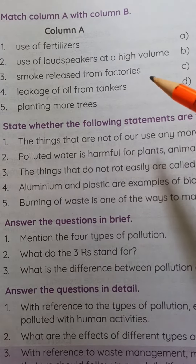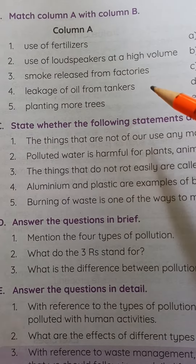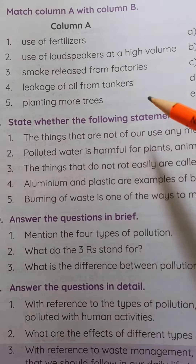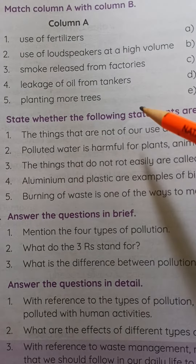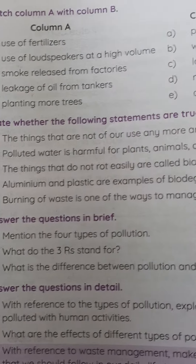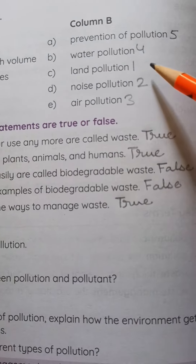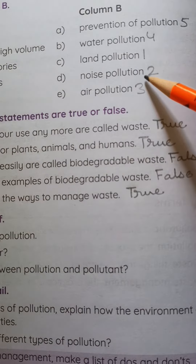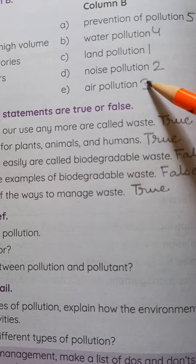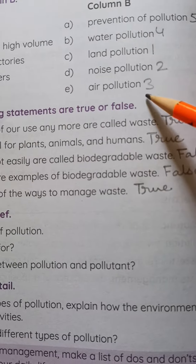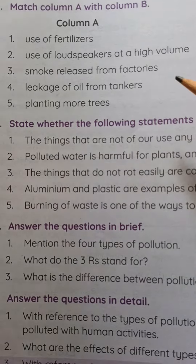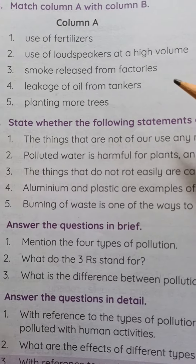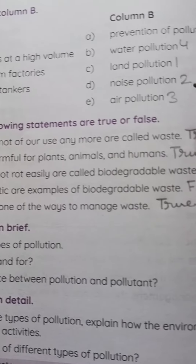Now match Column A with Column B. Column A: one — use of fertilizers; two — use of loudspeakers at a high volume; three — smoke released from factories; four — leakage of oils from tankers; five — planting more trees. Column B: a — prevention of pollution; b — water pollution; c — land pollution; d — noise pollution; e — air pollution.